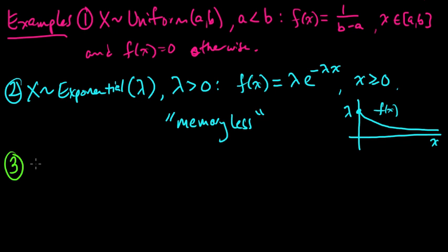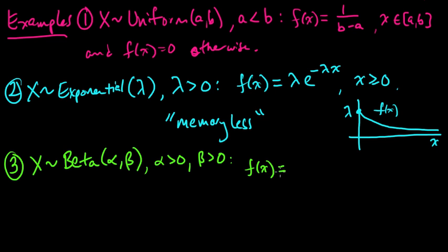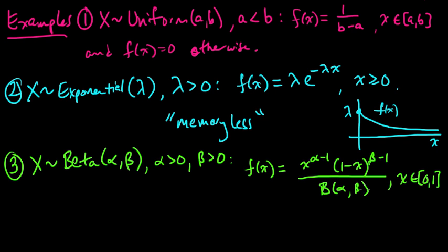The next one is useful in statistics, and it's the beta distribution. So x is distributed according to a beta, alpha, beta, the parameter is alpha and beta, where alpha is positive and beta is positive. If the PDF is equal to x to the alpha minus 1 times 1 minus x to the beta minus 1, divided by this quantity b, I'll denote it, well, this is the standard way to denote it, b of alpha comma beta, which is called the beta function, this is called the beta function, and this is for x in the interval from 0 to 1, and f is 0 elsewhere.